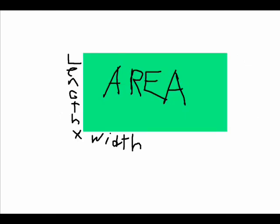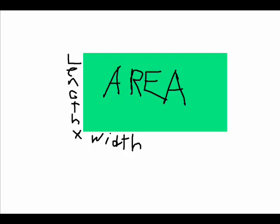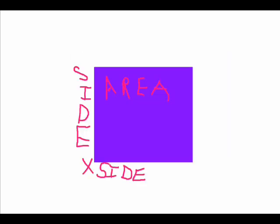Parentheses b times the h. It's length times width for rectangles and side times side for the square. It's length times width for rectangles and side times side for the square.